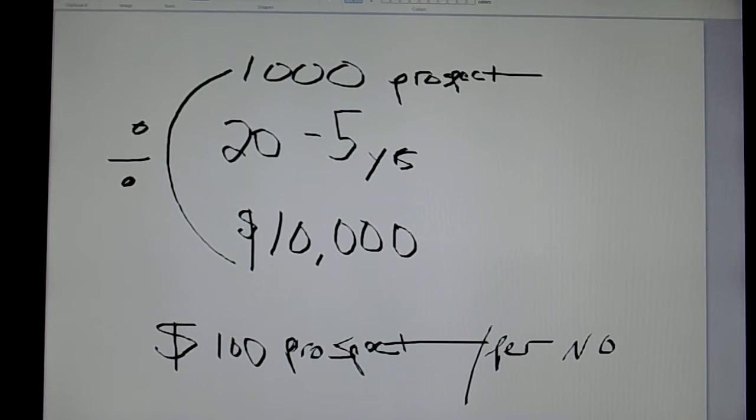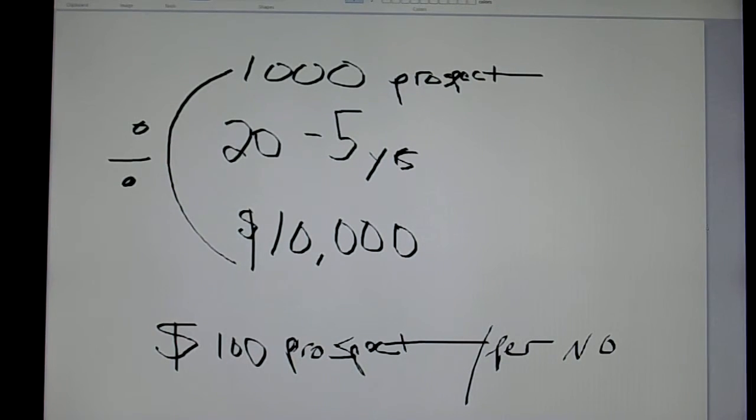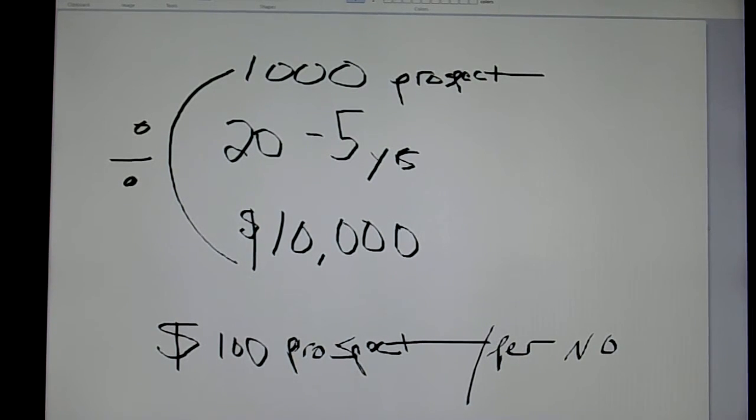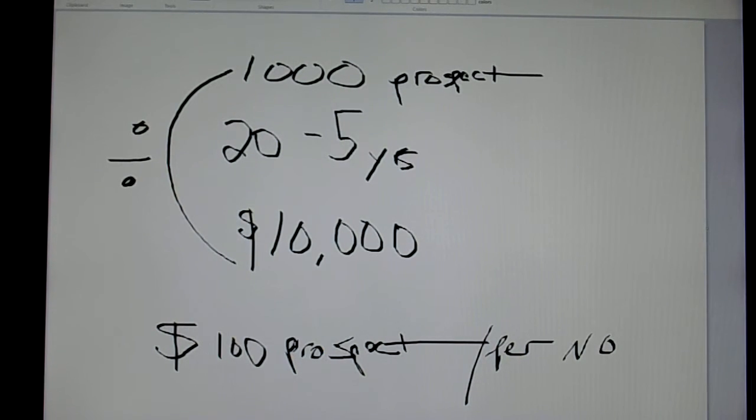Now if you're getting one no per hour, there you go. Then you're making a hundred dollars per hour. So just for example, if you're setting your goal out to get, like Ray Higdon said 30 no's a day. If you're setting your goal out to get eight no's a day and you work in your eight hour business, if you get a no an hour, that's eight hours. So you just made $800 in an hour of working your network marketing business.